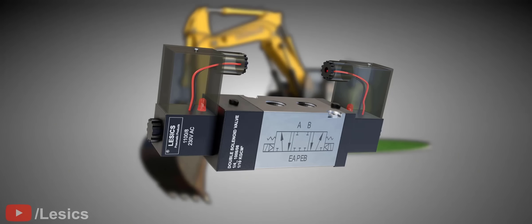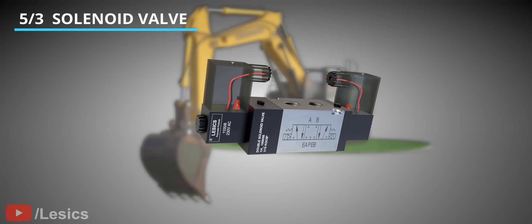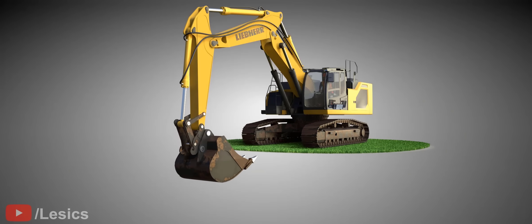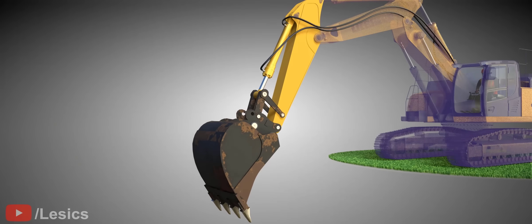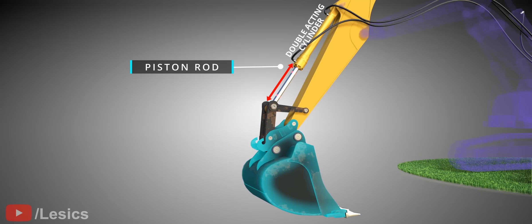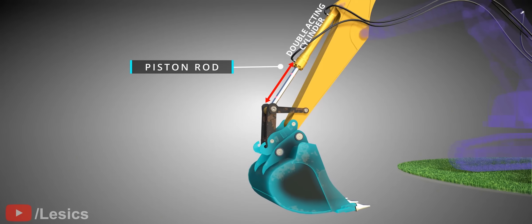Now, let's explore a very popular design, the 5x3 solenoid valve. Let's consider the bucket of this heavy-duty excavator. The bucket rotates thanks to a 5x3 solenoid valve. It is clear from this animation that when this double-acting cylinder's piston moves linearly, the bucket rotates.